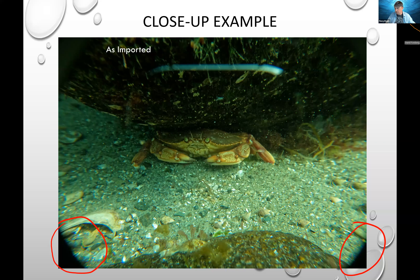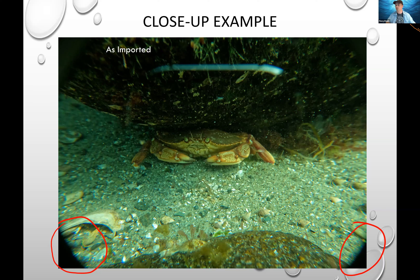Backscatter actually talks about this — the only way to fix this issue in-camera is to change the lens mode to Linear, which is that digital zoom one step down so you don't see the edges of the external lens. Unfortunately, you can't do that using RAW. So Backscatter basically says if you want to take macro photography, don't use RAW right now. I say just crop the image in Lightroom — that way you still get the benefits of RAW.